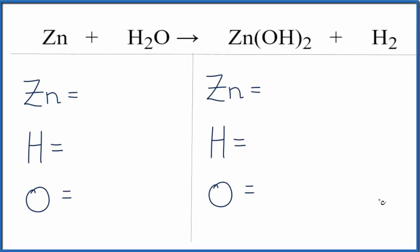To balance this equation, zinc plus water gives us zinc hydroxide plus hydrogen gas. Let's count the atoms up. We have one zinc, two hydrogens, and one oxygen.